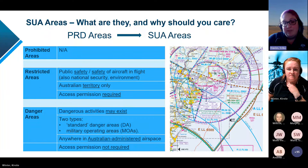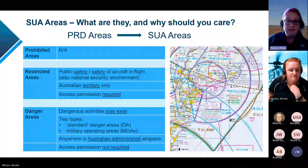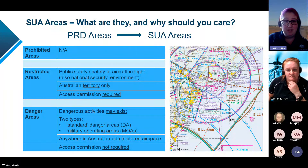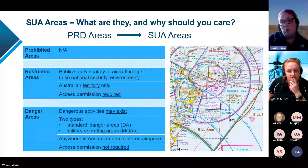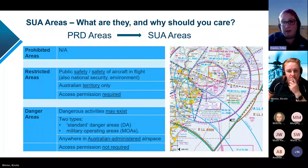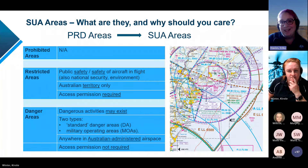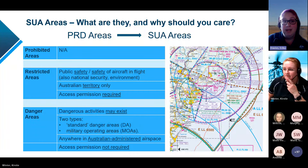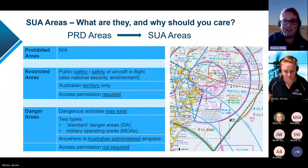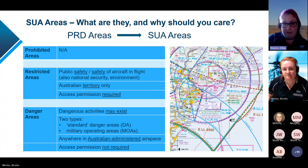Danger areas are declared where activities dangerous to the flight of aircraft may exist. This could be a gliding competition with a high density of gliders in the airspace, some kind of drone operation, or perhaps a flight training area such as the one west of Bankstown. These areas are typically more advisory in nature. As the pilot in command, you may still choose to fly through that airspace, but our intent when declaring these areas is that you can make that choice with a clear understanding of any potential hazard. As of the 30th of November last year, a new type of danger area was created: military operating areas, or MOAs.